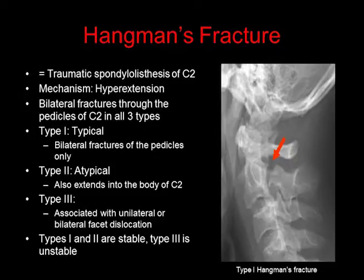A Hangman's fracture is otherwise known as a traumatic spondylolisthesis of C2. The mechanism is hyperextension, and these are bilateral fractures through the pedicles of C2 in all three types. Type 1 is known as typical Hangman's fracture — bilateral fractures of the pedicles only. Type 2 is atypical — the fracture extends into the body of C2. Type 3 is associated with unilateral or bilateral facet dislocation. Types 1 and 2 tend to be stable, and type 3 is unstable.